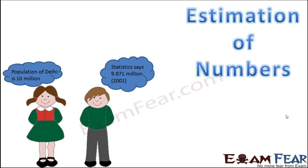When we talk about large numbers, small differences don't matter much. Whether the population is 9.871 million or 10 million doesn't make much practical difference. Just for convenience and ease of use, estimation or rounding of numbers is often done.